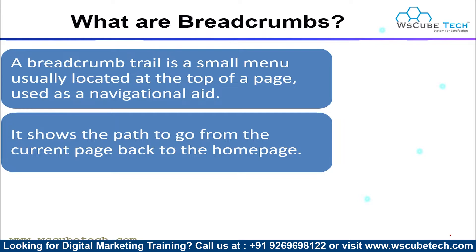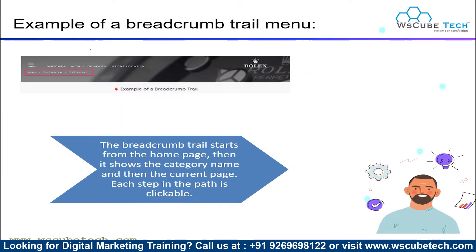Let me give you an example. Here you can see a particular page — this is our landing page. Before this landing page, we have a homepage and another page. This navigation is known as a breadcrumbs trail. It starts from the homepage, then shows the category name, and then the current page. Each step in the path is clickable.